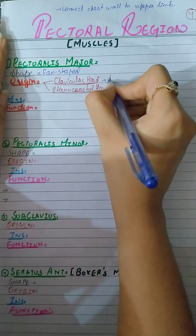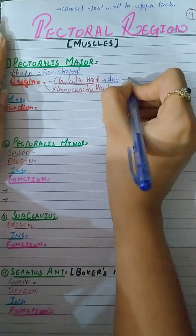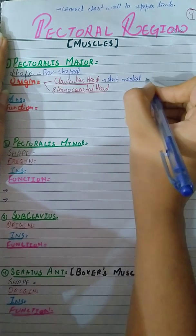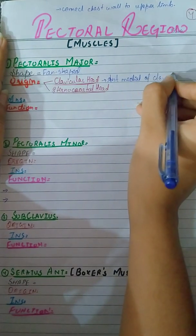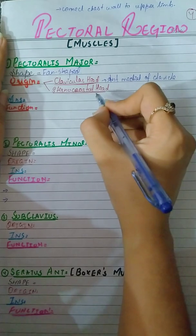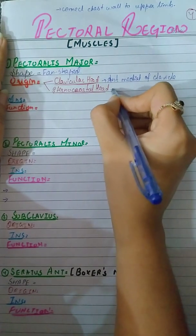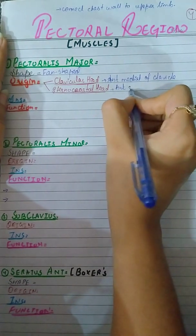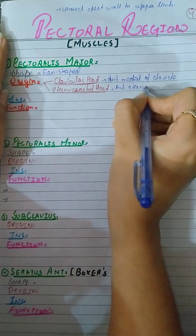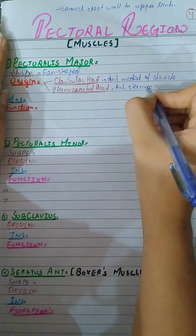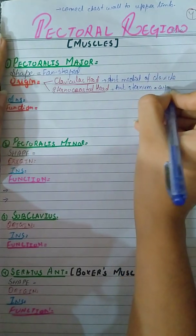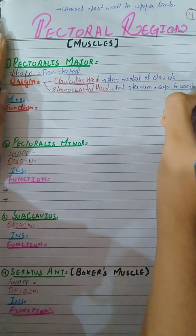The second head, the sternocostal head, is from the anterior sternum or the superior six costal cartilages.